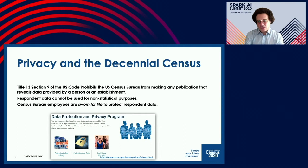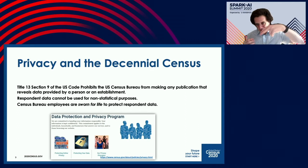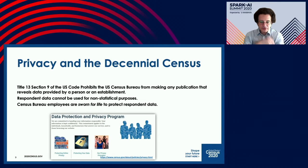For the decennial census and all data products the U.S. Census Bureau puts out, we also have to follow strict confidentiality requirements as specified in law in Title 13, Section 9 of the U.S. Code — Title 13 is the Census Act. Section 9 says we cannot make any publication that reveals the data provided by a person or an establishment. We can't make any publication so that you can draw a line from the person to the data publication. Census Bureau employees are sworn for life to protect that respondent data, and the data cannot be used for non-statistical purposes — not for law enforcement, immigration, or anything like that.